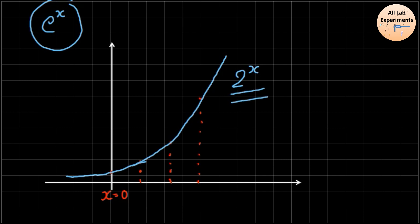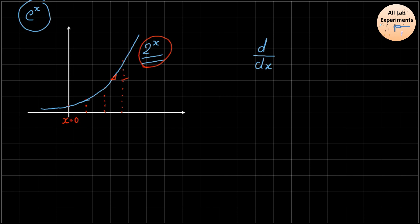This is an exponential function defining a quantity that doubles after each interval. Now, what if I differentiate this function? The formula is: d/dx of 2^x gives 2^x times the natural logarithm of 2. So you can see that the differentiation of this function is the same function multiplied by some constant.